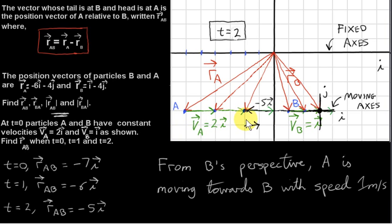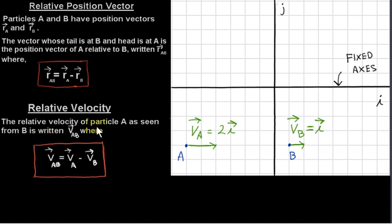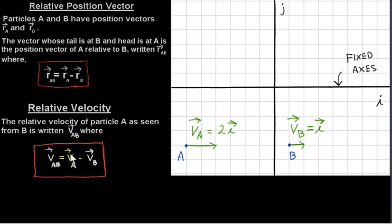This example leads us to the concept of relative velocity. The relative velocity of particle A as seen from particle B is written VAB, where VAB equals VA minus VB. Notice that this formula for relative velocities has the same form as the formula for the relative position vector. However, this formula is more difficult to understand, so we'll start with a simple example — the same example as before — to see it working before doing more complicated cases.